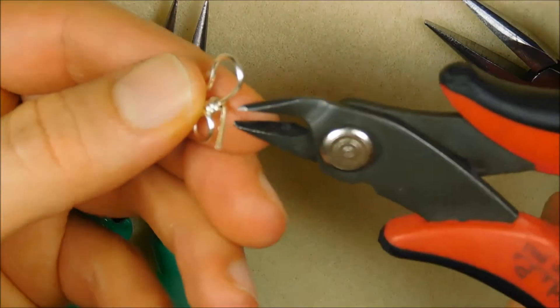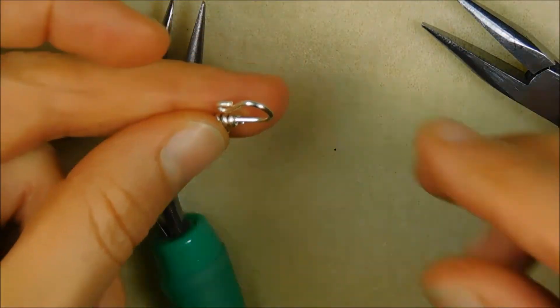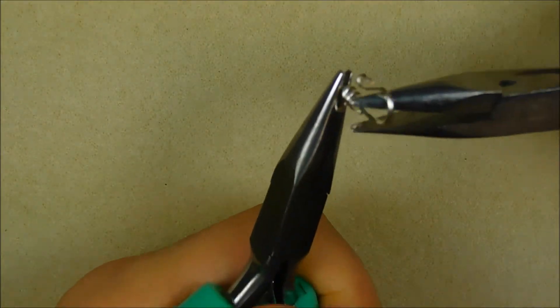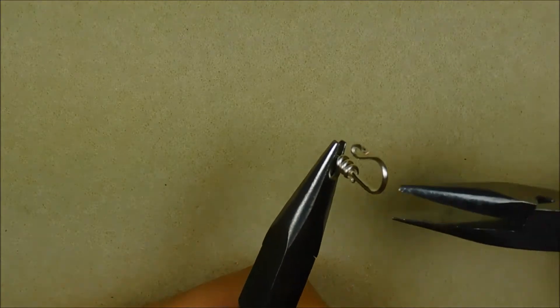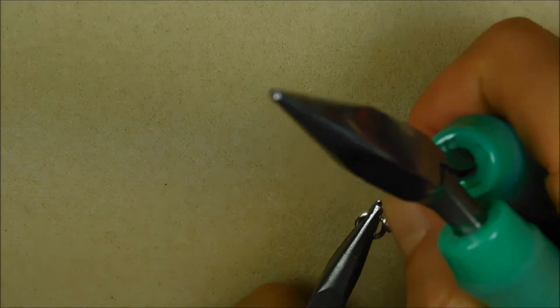Trim the excess wire using your flush cutters. Tighten down the end of the wire with your pliers. If necessary, use your file to smooth any burrs or sharp edges.